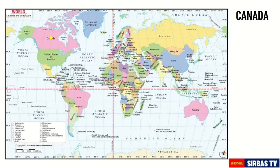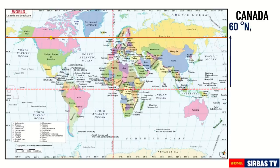The second step is to draw a horizontal line from this point. The degree of latitude where the horizontal line will lie will serve as the latitude coordinate of this place. In this case, we have 60 degrees north. It is north since Canada is located on the northern hemisphere and above the equator.